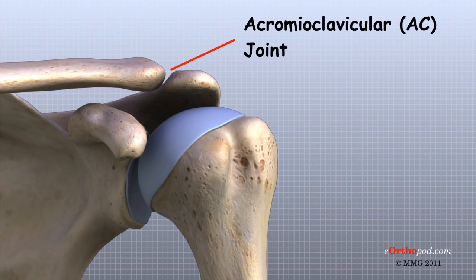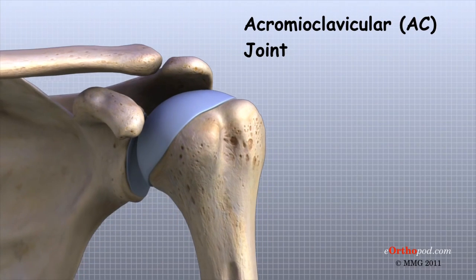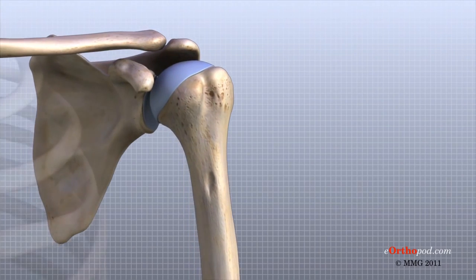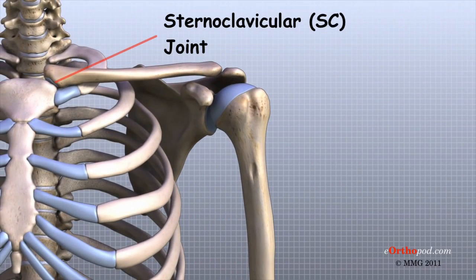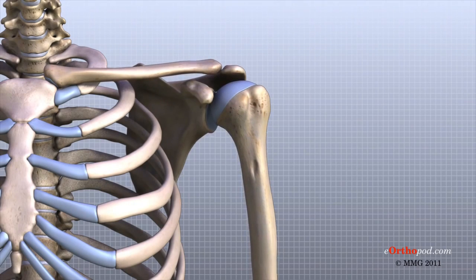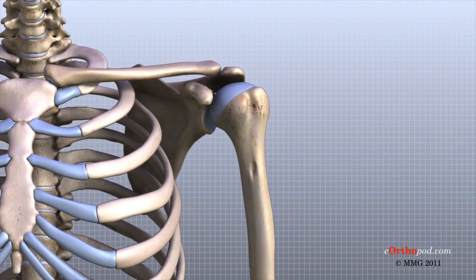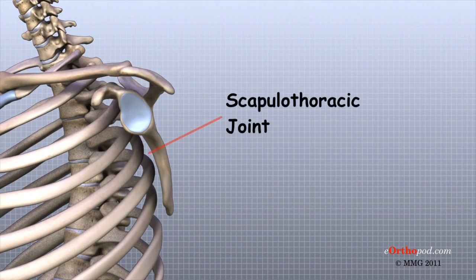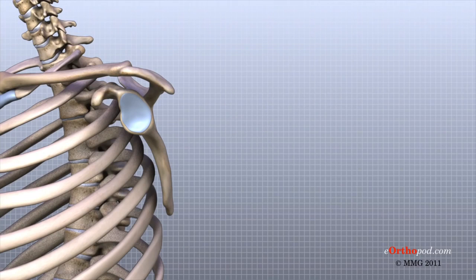The acromioclavicular, or AC joint, is where the clavicle meets the acromion. The sternoclavicular, or SC joint, supports the connection of the arms and shoulders to the main skeleton on the front of the chest. A false joint is formed where the shoulder blade glides against the rib cage. This joint, called the scapulothoracic joint, is important because it requires that the muscles surrounding the shoulder blade work together to keep the socket properly aligned during shoulder movement.